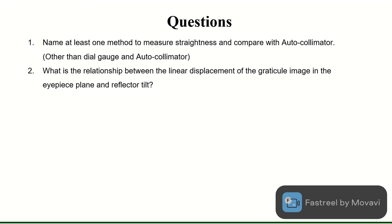Here are the two questions for the assignment. The first one is: name at least one method to measure straightness and compare it with the autocollimator. I already talked about two methods — dial gauge and autocollimator — and a third method I will give you an idea about; you should go through it, understand it, and try to answer the question. The second is a straightforward question: what is the relation between the linear displacement of the graticule image in the eyepiece plane and the reflector tilt? I think it is a very easy question to answer. Thank you.